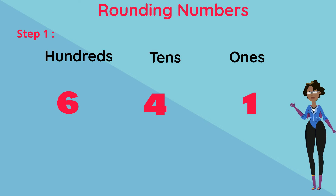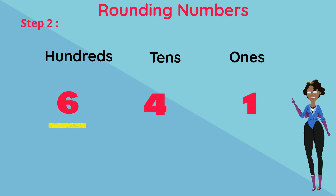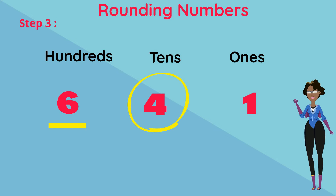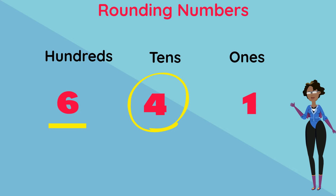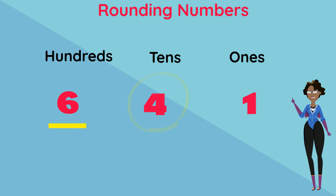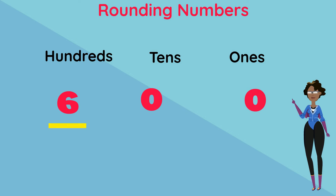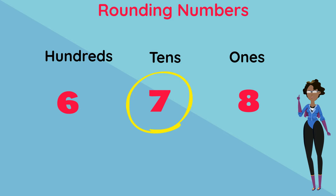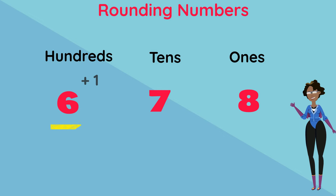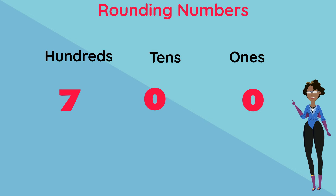Step 1: Underline the 100s digit. Step 2: Look at the 10s digit. Step 3: If the 10s digit is less than 5 — meaning 4, 3, 2, or 1 — then the 100s digit remains the same and 0 replaces the 10s and 1s digits. If the 10s digit is 5 or more — meaning 5, 6, 7, 8, or 9 — we add 1 to the 100s digit and write a 0 to replace the 10s and 1s digits.